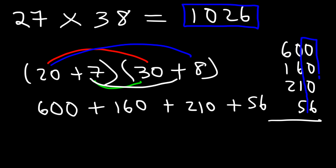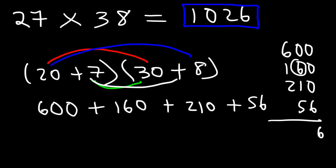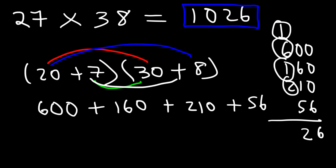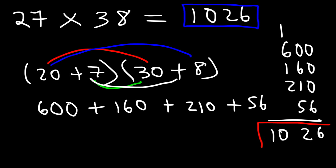In the first column we have three zeros plus a 6, giving us 6. In the second column: 6 plus 1 is 7, plus 5 is 12 — write the 2, carry over the 1. Then 1 plus 6 is 7, 7 plus 1 is 8, and 8 plus 2 is 10. We get the same result of 1026.